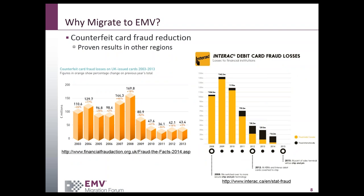In the UK chart, we see counterfeit fraud losses increasing as much as 46% in a single year before a tipping point is reached where both EMV issuance and acceptance are such that there is nowhere for the fraudster to go. This did not occur until 2008, meaning the remaining non-EMV participants bore the brunt of ever-increasing fraud. In Canada, we see steadily declining fraud beginning in 2010 for domestic transactions, while counterfeit fraud using Canadian cards increases as fraudsters take their cards to the U.S.